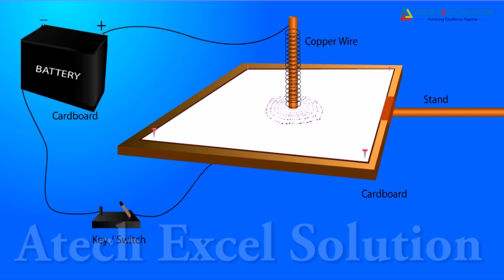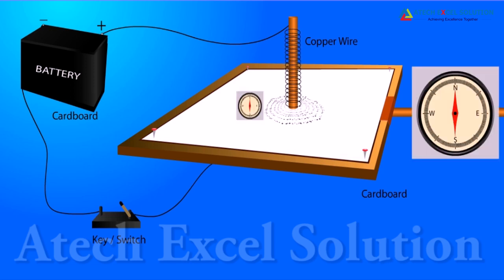To find the direction of the magnetic field, we place a compass at point P over a circle. The direction of the north pole of the compass needle would give the direction of the field lines produced by the electric current.